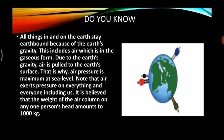All things in and on the earth stay earth-bound because of the earth's gravity. This includes air, which is in gaseous form. Due to the earth's gravity, air is pulled to the earth's surface. That is why air pressure is maximum at sea level. It is believed that the weight of the air column on any one person's head amounts to 1000 kg.